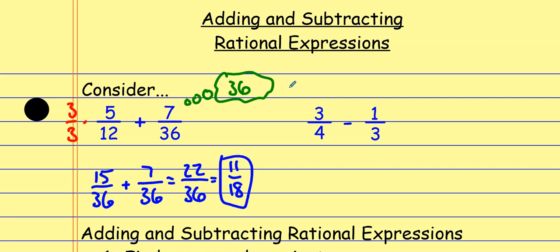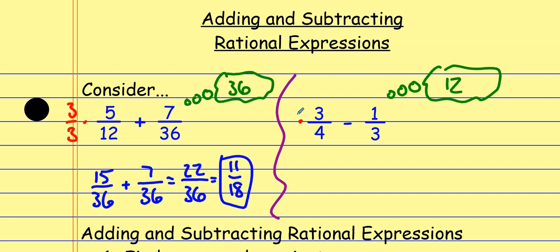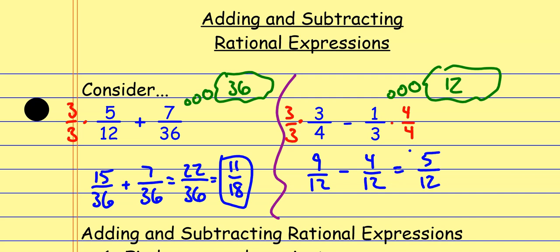But again, the big thing is we need common denominators. Looking at this next one, thinking about the common denominator between 4 and 3 — something they can both multiply to is going to be 12. So this first fraction I multiply by 3 over 3, and the second fraction I multiply by 4 over 4. That gives me 9 over 12 minus 4 over 12. Now I have common denominators; I subtract the numerators, denominator stays the same — that's 5 over 12, which can't be reduced.